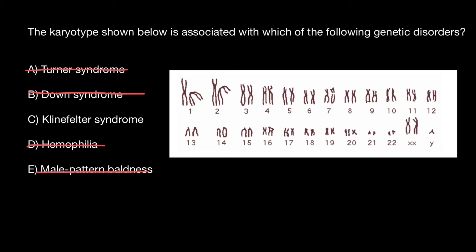The only variant left is Klinefelter syndrome. This is when a male — and we see a Y chromosome is present here, so whenever we see a Y chromosome, phenotypically it's going to be a male no matter how many X chromosomes are present — has two X chromosomes instead of one. We expect a normal male to have one X and one Y chromosome. One of the X chromosomes in males with Klinefelter syndrome would form a Barr body.